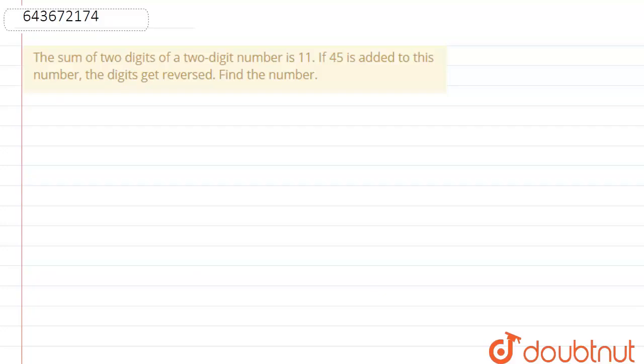The sum of two digits of a two-digit number is 11. If 45 is added to this number, the digit gets reversed. Find the number.